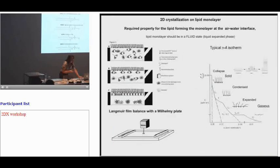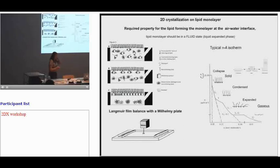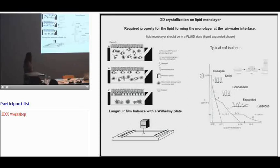An important property concerns lipids used to form the lipid monolayer for 2D crystallization. This is an elegant technique: the lipid monolayer supports the protein, the protein binds to this monolayer, and then the detergent is removed, resulting — when successful — in two-dimensional crystals. There are reconstituting lipids and lipids that help formation of the 2D crystallization.